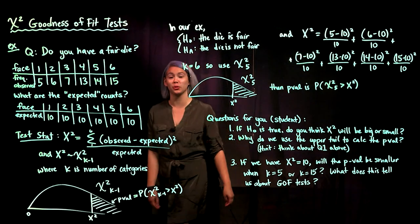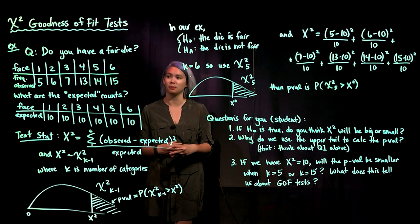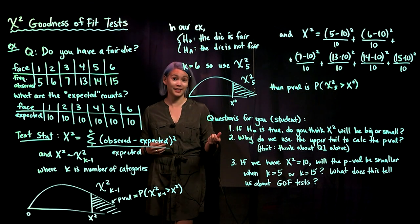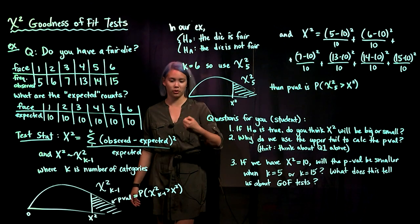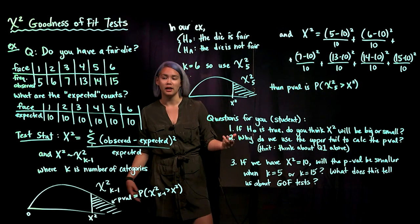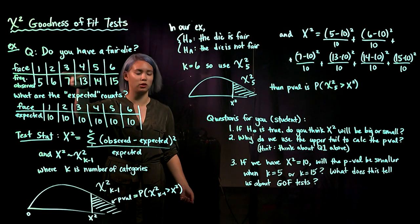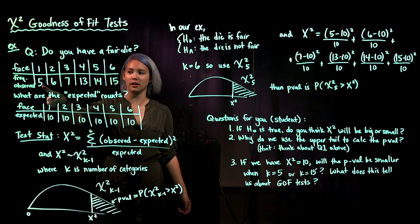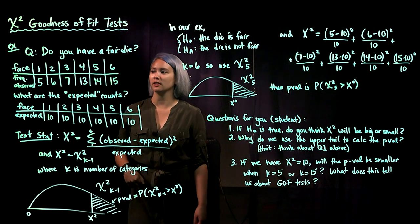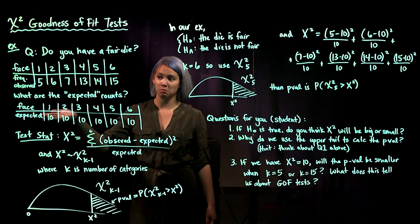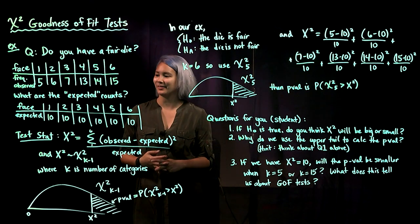In this video we're going to talk about chi-squared goodness of fit tests. To explain goodness of fit tests, imagine you have a die and you're wondering: is this a fair die or is it biased in some way? You could collect data by rolling the die 60 times, then arrange it in a table showing faces one through six. Just looking at this data, we would be inclined to say this is not a fair die, but we should actually do the test.